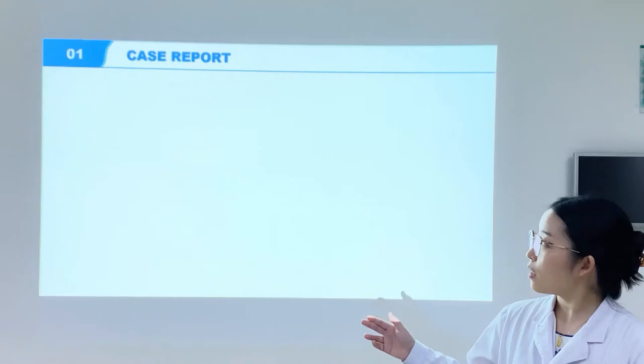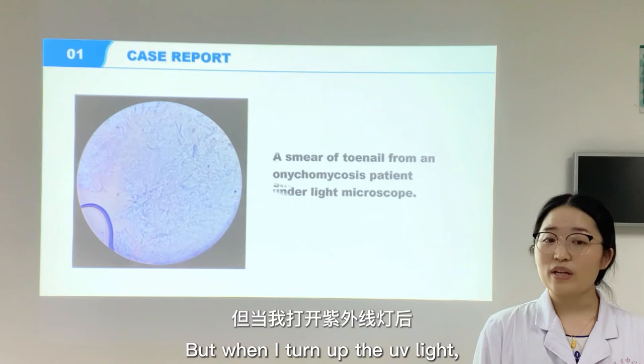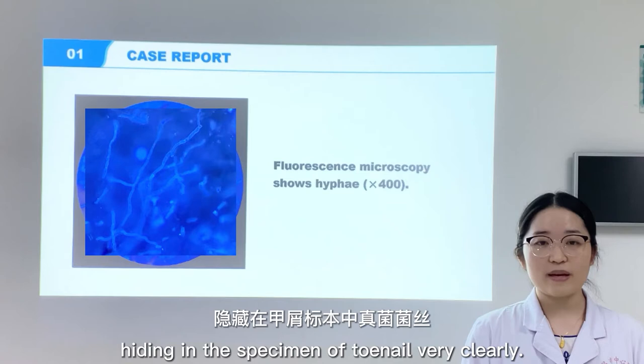This is the smear of toenail from an onychomycosis patient under the microscope. However, you could barely see anything related to fungus. But when I turn up the UV light, things become different — now we could see hyphae hiding in the specimen of toenail very clearly.